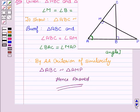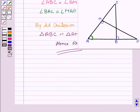Hope you understood the first part. Now let's see the next part. We have to show that CA upon PA equal to BC upon MP. Now let's start with the solution.